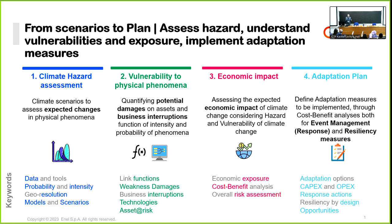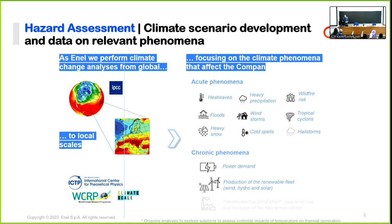We have developed matrices in which we have mapped our technologies — power plants for power production, power grids, both renewable and thermal power plants — against all the phenomena important to us. Both chronic changes are important because they affect power demand and renewable production resources, as well as the efficiency of thermal power plants. And of course we are affected by a wide range of acute phenomena that impact us through business interruption or damages.